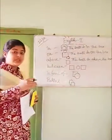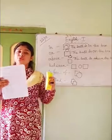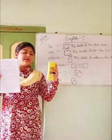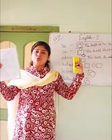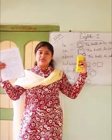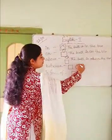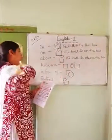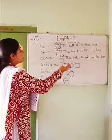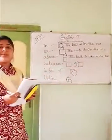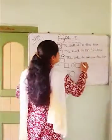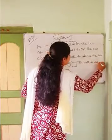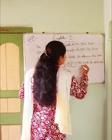Next: 'between.' Between means there will be two things and one thing in between them. If there is a duster and a book, my face is between the two things. Here there is one ball, with one box on the right side and one box on the left side. So the sentence is: the ball is between the boxes.